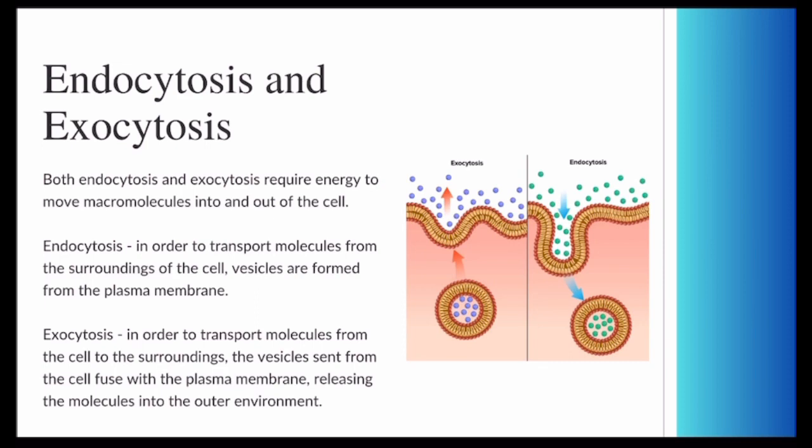This is endocytosis and exocytosis. Endocytosis is in which molecules are transported from outside the cell into the cell, while exocytosis is where molecules are transported from the inside of the cell to the outside of the cell. In both endocytosis and exocytosis, the vesicles fuse with the plasma membrane to either release molecules into the external environment, or to transport molecules into the internal environment.